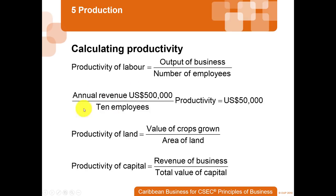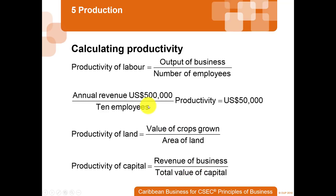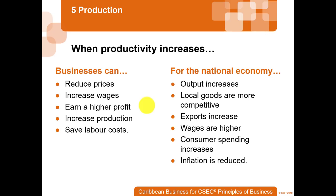For calculating productivity: productivity of land equals the value of crops grown divided by the area of the land. Productivity of capital equals the revenue of the business divided by the total value of the capital. This likely won't feature heavily on the exam, so we don't need to stress too much on these formulas.